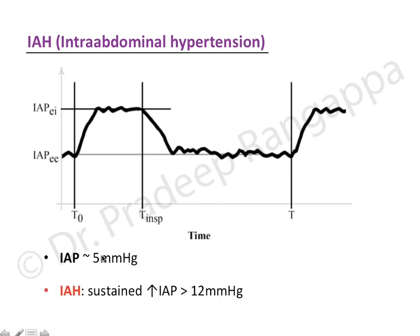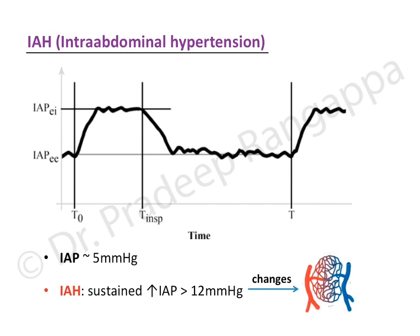Intra-abdominal hypertension is defined as a sustained increase in intra-abdominal pressure. The word 'sustained' is important — when we cough or have acute ileus the pressure may transiently rise, but when there is a sustained increase more than 12 mmHg, you call it intra-abdominal hypertension. This causes changes in the microcirculation and bowel circulation.